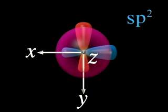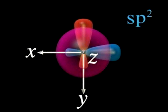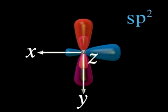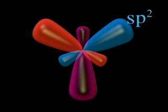Notice that the hybrid orbitals have major lobes which contain most of the electron density in the orbital. These are used in bonding to other atoms.